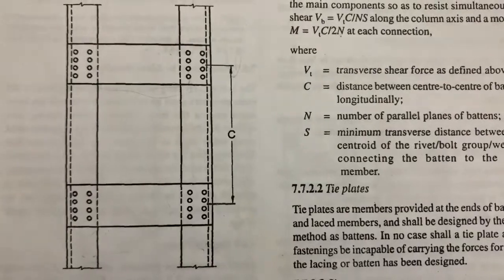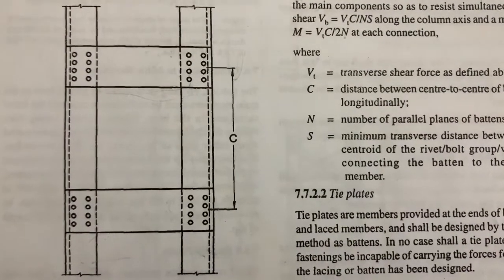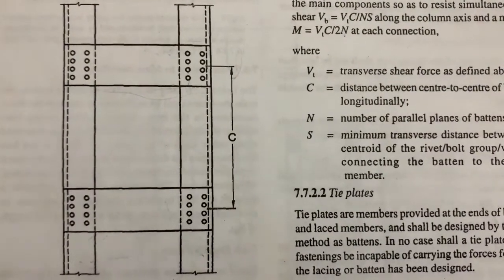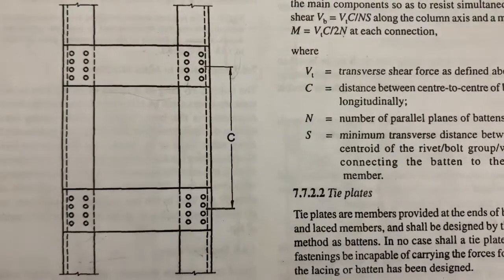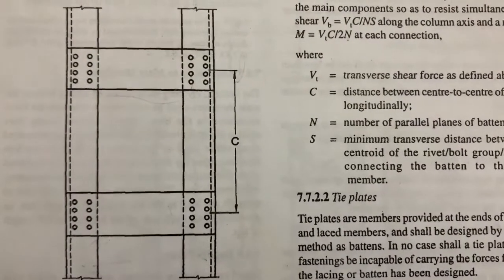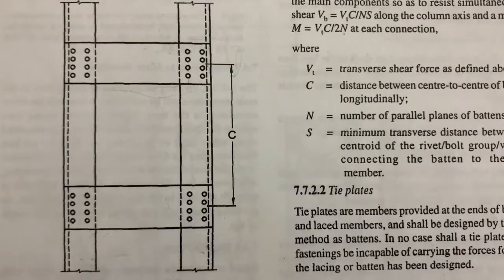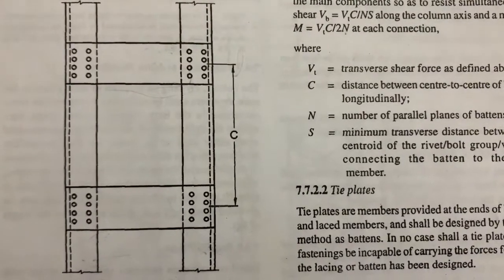In IS 800 2007, the code is specifying some design procedure for design of lacings and battens. In the next video I'll show you the lacing members specifications and the design procedures. Thank you so much, thanks for watching.